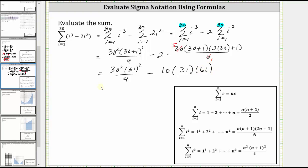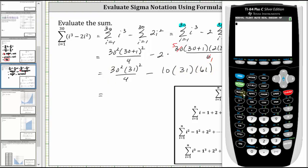And now let's go to the calculator. We need parentheses around the numerator here, so we have open parenthesis 30 squared times 31 squared, closed parenthesis, divided by four, and then we have minus 10 times 31 times 61, which is equal to 197,315.